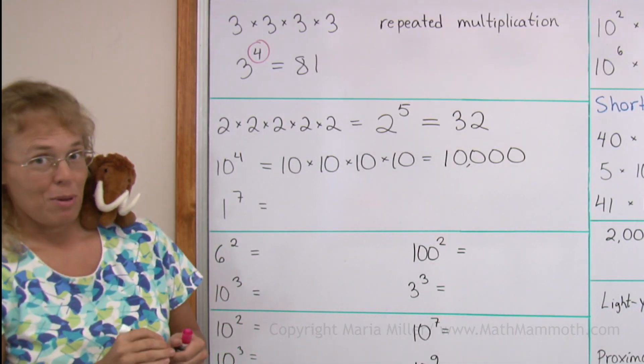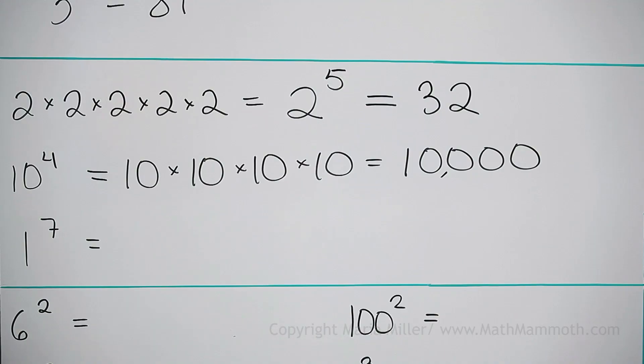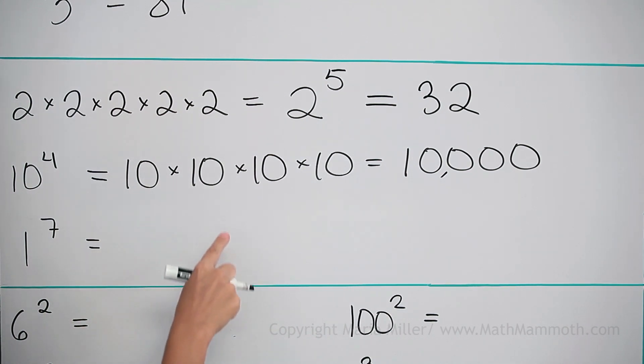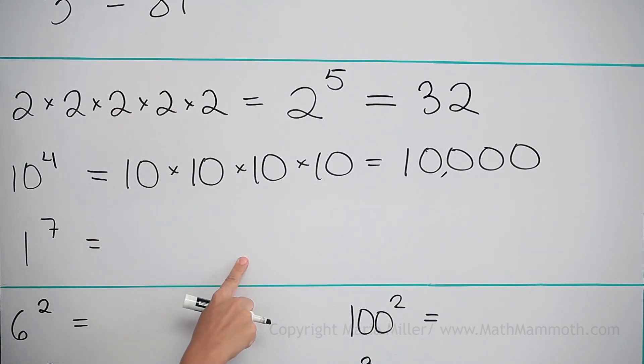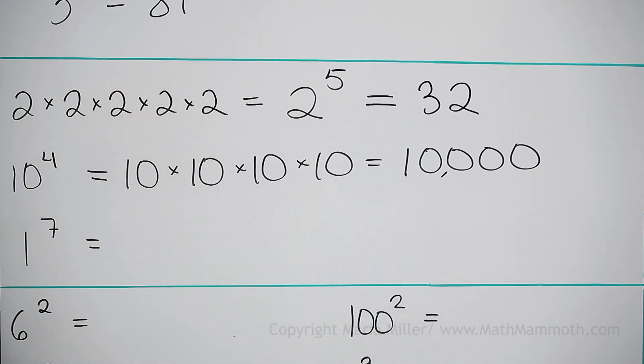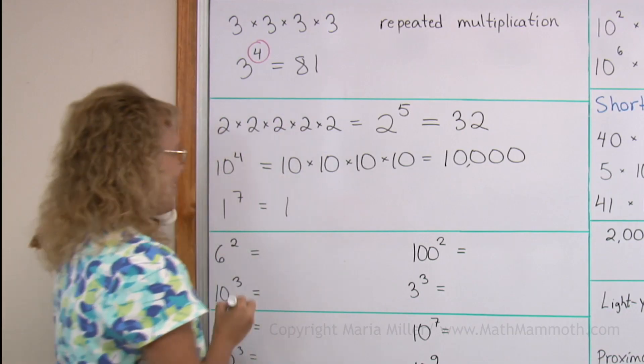1 to the seventh power would be 1 times 1 times 1 times 1 times 1 times 1 times 1. But we will never get anywhere — we will just get 1.